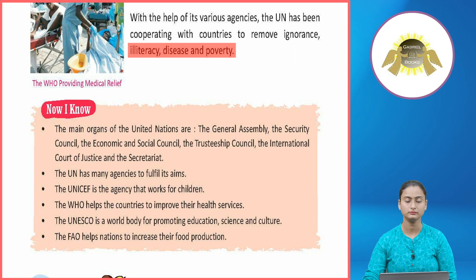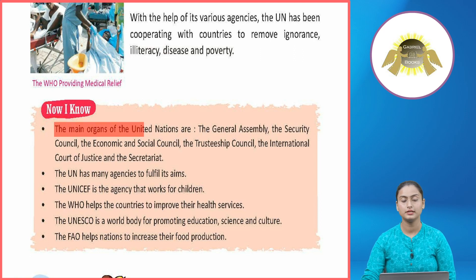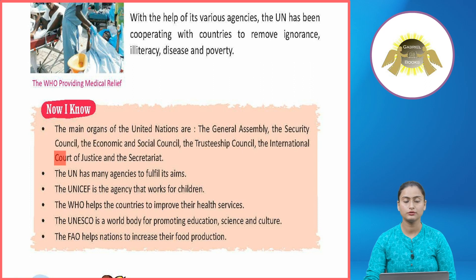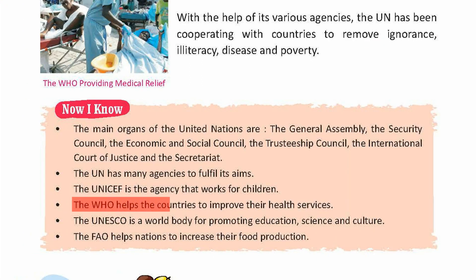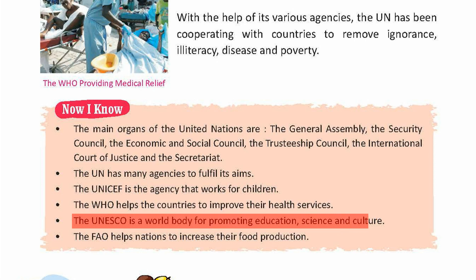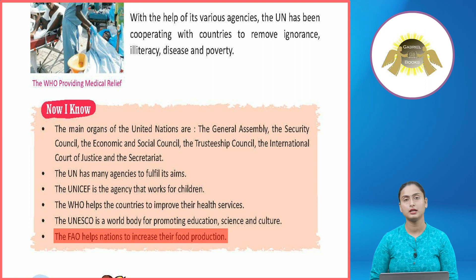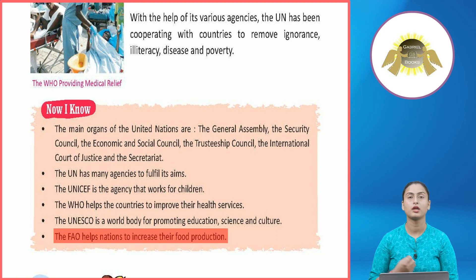Summary: The main organs of the United Nations are the General Assembly, the Security Council, the Economic and Social Council, the Trusteeship Council, the International Court of Justice, and the Secretariat. The UN has many agencies to fulfill its aims. UNICEF works for children; WHO helps countries improve their health services; UNESCO promotes education, science, and culture; FAO helps nations increase their food production. Students, with this we come to the end of this chapter — please do all the exercises on your own.